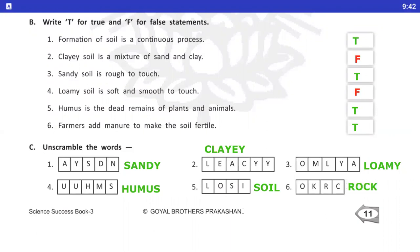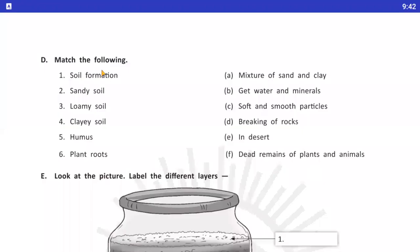Now, question Number 4 is match ups. Match the following. Number 1, soil formation. Soil formation ka answer hai D, breaking of rocks. Number 2, sandy soil. Answer is in desert. Sandy soil kaha milti hai? Desert mein.